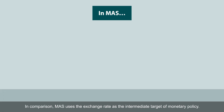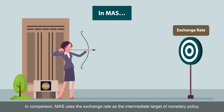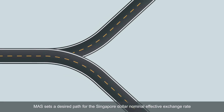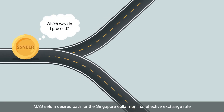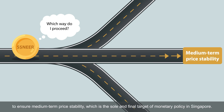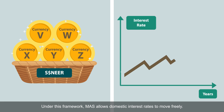In comparison, MAS uses the exchange rate as the intermediate target of monetary policy. MAS sets a desired path for the Singapore dollar nominal effective exchange rate to ensure medium-term price stability, which is the sole and final target of monetary policy in Singapore. Under this framework, MAS allows domestic interest rates to move freely.